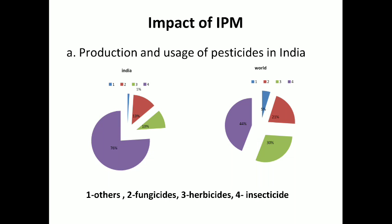Next, regarding the impact of IPM. Regarding production of pesticides in India, it started around the year 1952, and in Asia, India ranks first for the production of pesticides. The pattern of pesticide use in India and the world is different, as shown in the pie chart. In India, among pesticides, 70% is insecticide, while in the case of the world, only 40% is used.